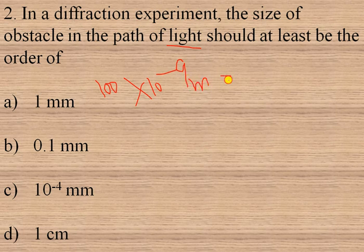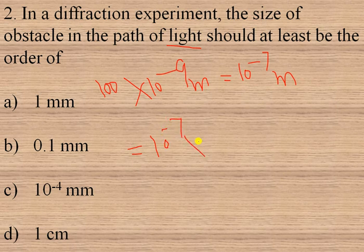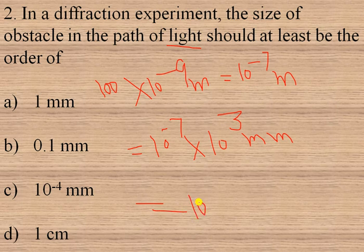This is equal to 10 power minus 7 meter, which equals 10 power minus 4 mm. So option C is the right option.